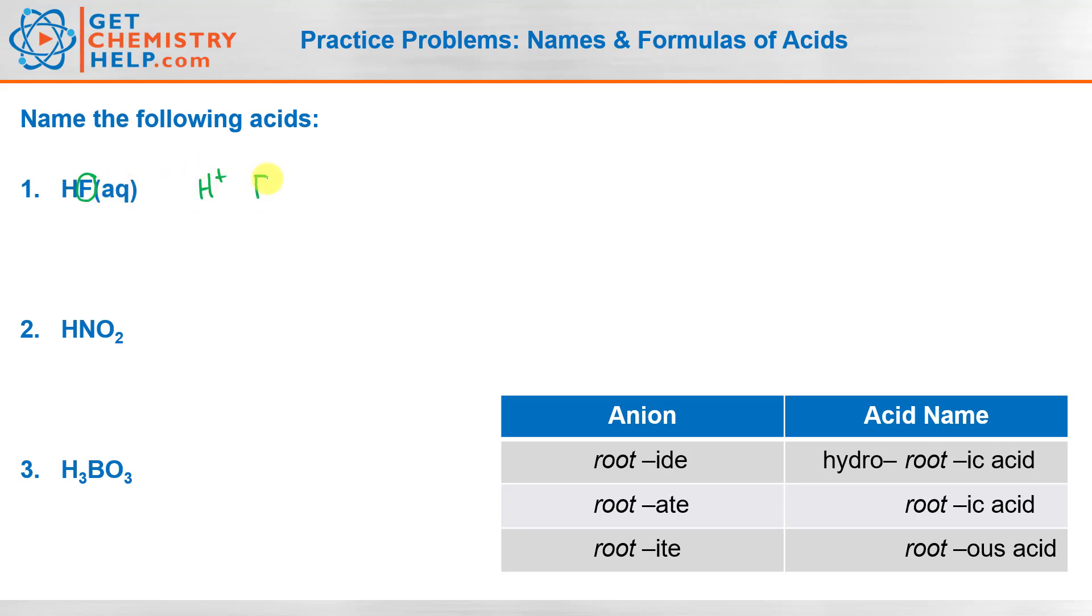That means the anion must be F minus. Well a non-metal by itself, that's just going to be the element name changed to Ide. So this we would call fluoride. Well because the anion ends in Ide,